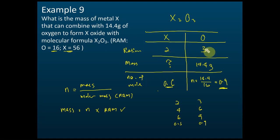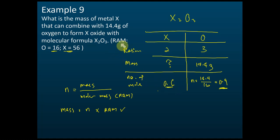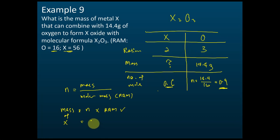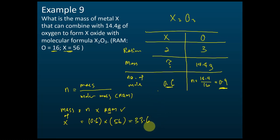Now we have the number of moles of X (0.6) and the relative atomic mass of X (56). Therefore, the mass of X = 0.6 × 56 = 33.6 grams.